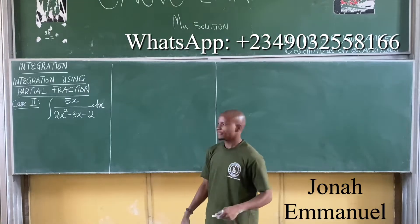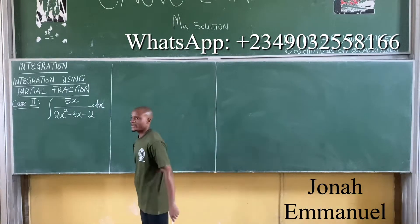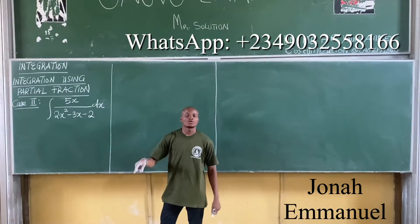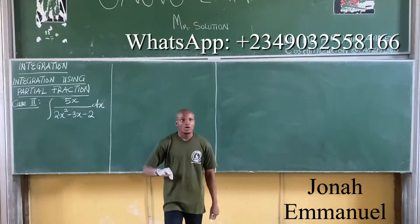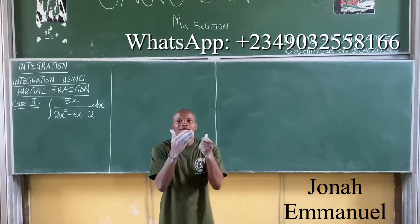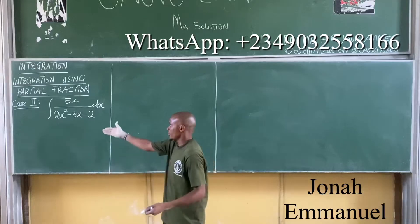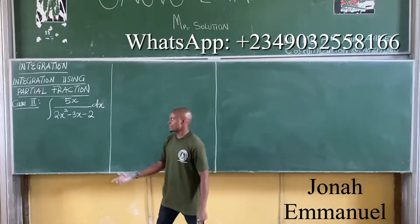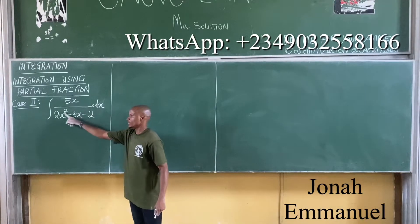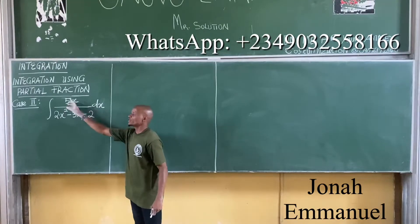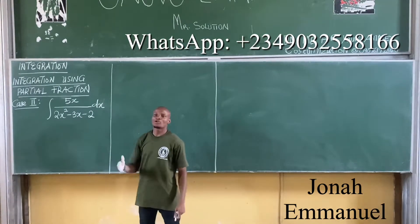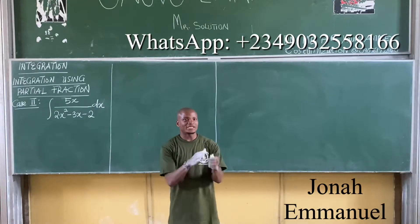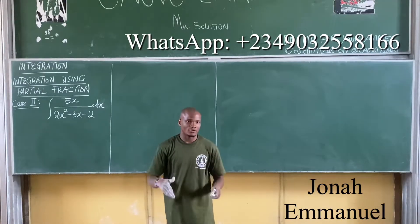Let's look at case 2 of integration using partial fraction. We said for case 2, the degree of the numerator is less than the degree of denominator. You can see degree here is 1, degree here is 2. So the degree of the numerator is less than that of the denominator. What do you do here? You resolve this partial fraction then integrate through.